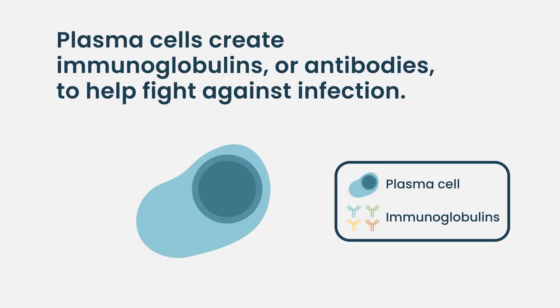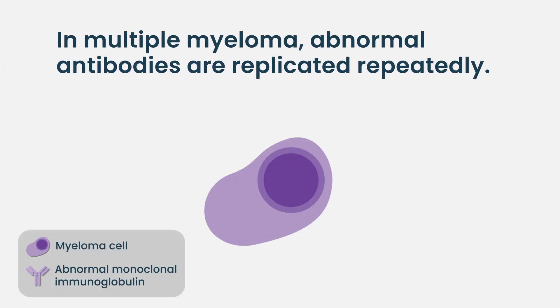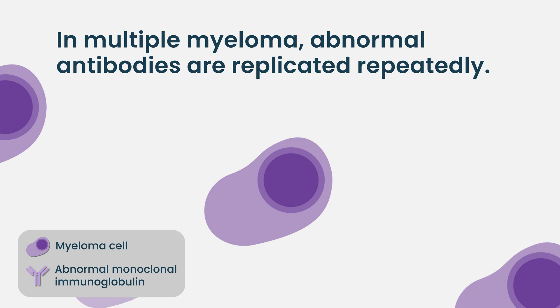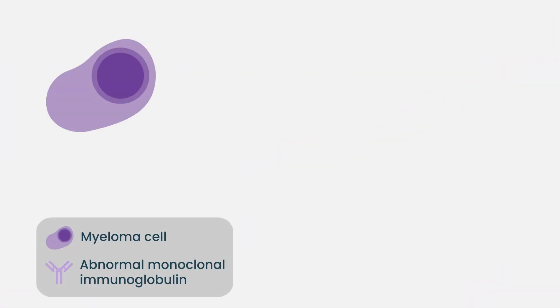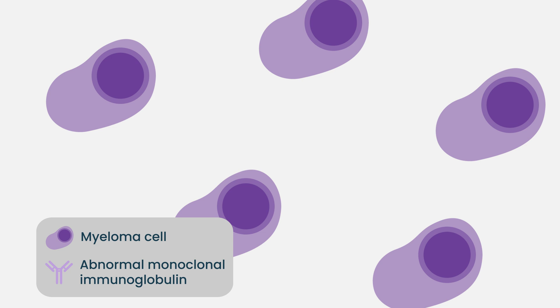Typically, our plasma cells create all different types of antibodies to fight against infection. In cases of multiple myeloma, there is irregular replication of a plasma cell, and rather than creating a bunch of different antibodies, one antibody is replicated over and over again. This can also be termed in multiple myeloma as a monoclonal protein — it's this abnormal protein.